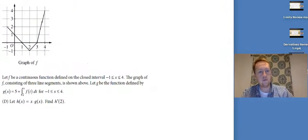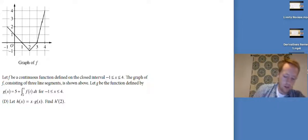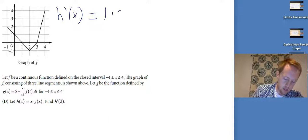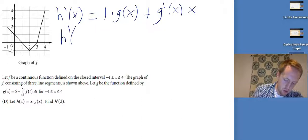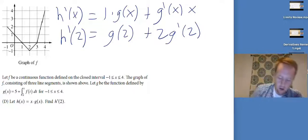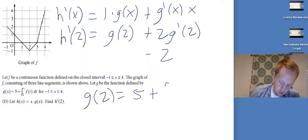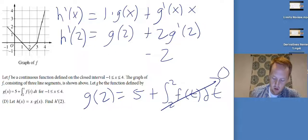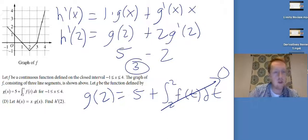Let h(x) equal x times g(x). Find h prime of two. I need h prime of x first — it's a product of two functions, so use the product rule: h prime of x equals g(x) plus x times g prime(x). At x equals two: h prime(2) equals g(2) plus 2 times g prime(2). Since g prime equals f, g prime(2) equals f(2) which equals negative one from the graph. And g(2) equals five plus the integral from two to two of f(t) dt — same bounds, so that integral is zero, giving g(2) equals five. So h prime(2) equals five minus two, which equals three.